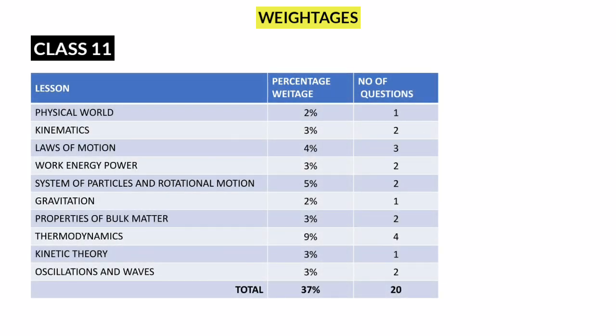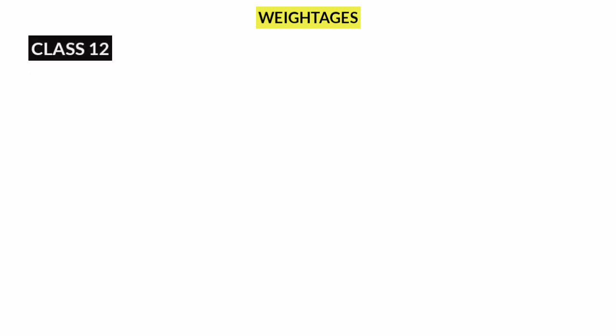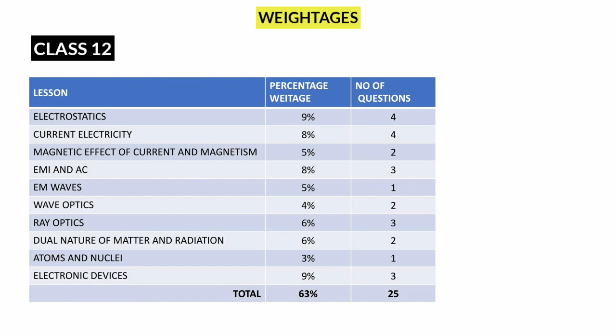For the tips and tricks, let's see one of the chapters. Let's calculate the last 10 years of the NEET exam paper analysis. Don't worry about the slight changes year to year in one or two chapters. 11th physics and 12th physics is very important. On the 11th, 37%, that's 20 questions. But on the 12th, 63%, that's 25 questions.